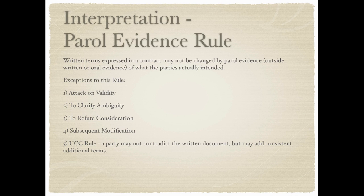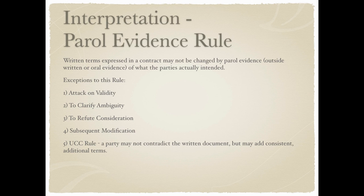Here are some exceptions to the parol evidence rule: if you're arguing the contract itself is not valid, outside evidence can come in. To clarify an ambiguity — if something in the contract is worded so it can have two different meanings, the court needs to look at that. To refute consideration — showing that consideration was not actually paid. Any kind of subsequent modification — for instance, if after signing the lease the landlord later agrees to let you have a dog for an extra $50 a month, you can bring in evidence of that modification. The UCC says a party may not contradict the written document, but can add consistent additional terms.